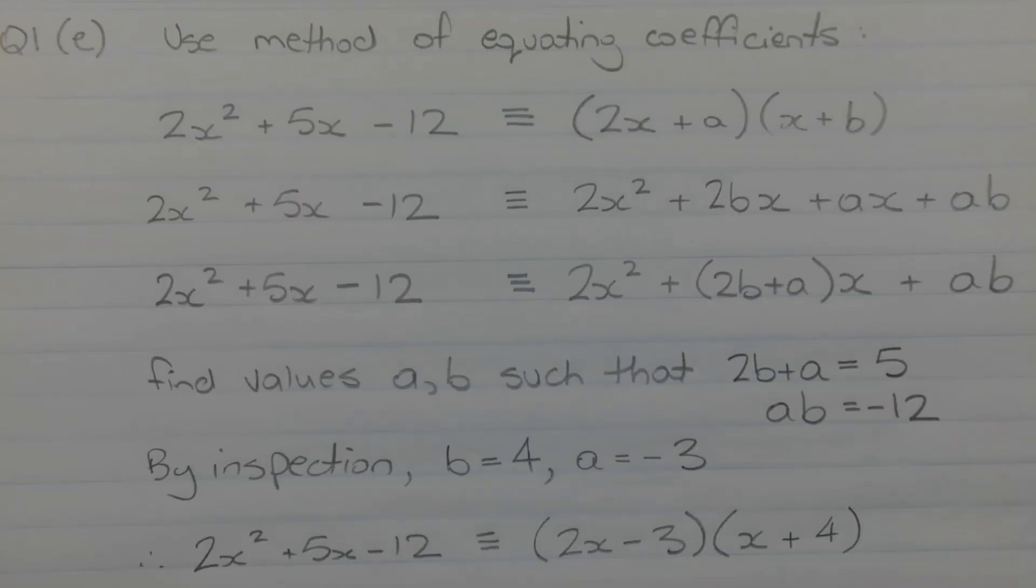There are many methods that may be used to factorize a non-monic quadratic expression. In this sample solution, I'm going to use the method of equating coefficients. So I'm going to write 2x squared plus 5x minus 12 in factor form 2x plus a in brackets times x plus b in brackets.